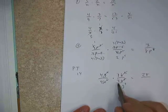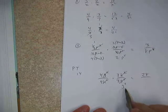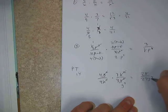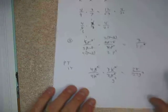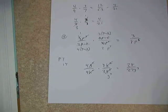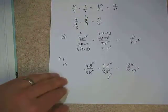So ultimately, final answer then. Multiply the tops. 7 times 4 is the only thing left. We get 28. On the bottom we have a 9 and a 3 and a g to the 3rd. So we get 27g to the 3rd. And we're good to go.